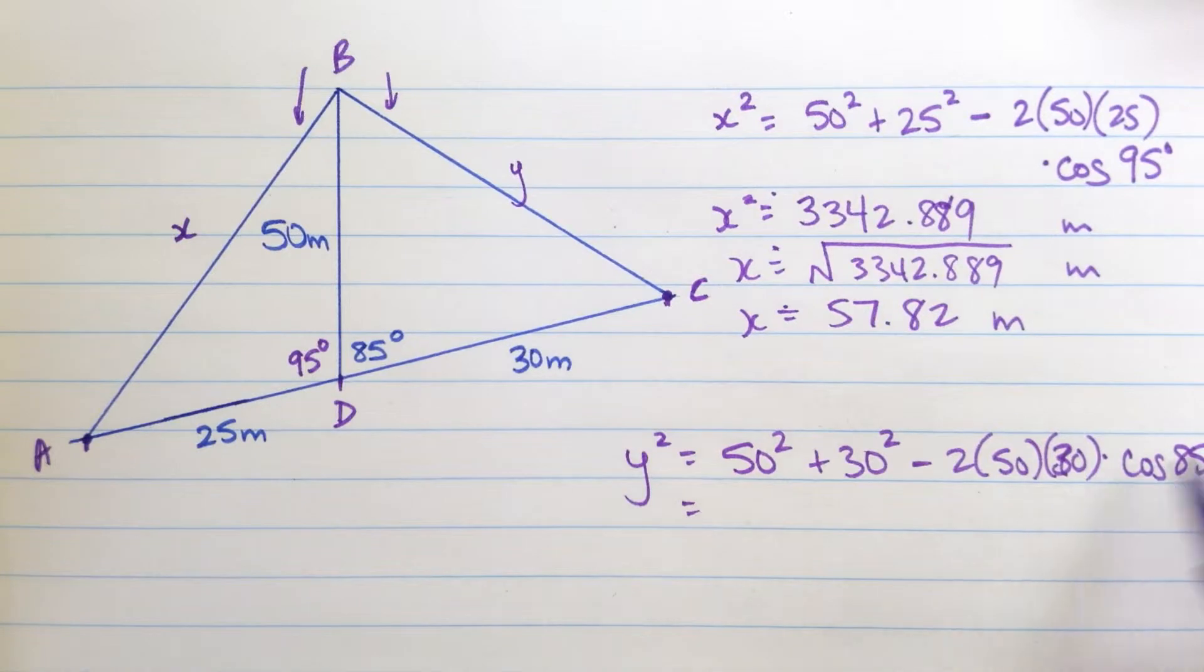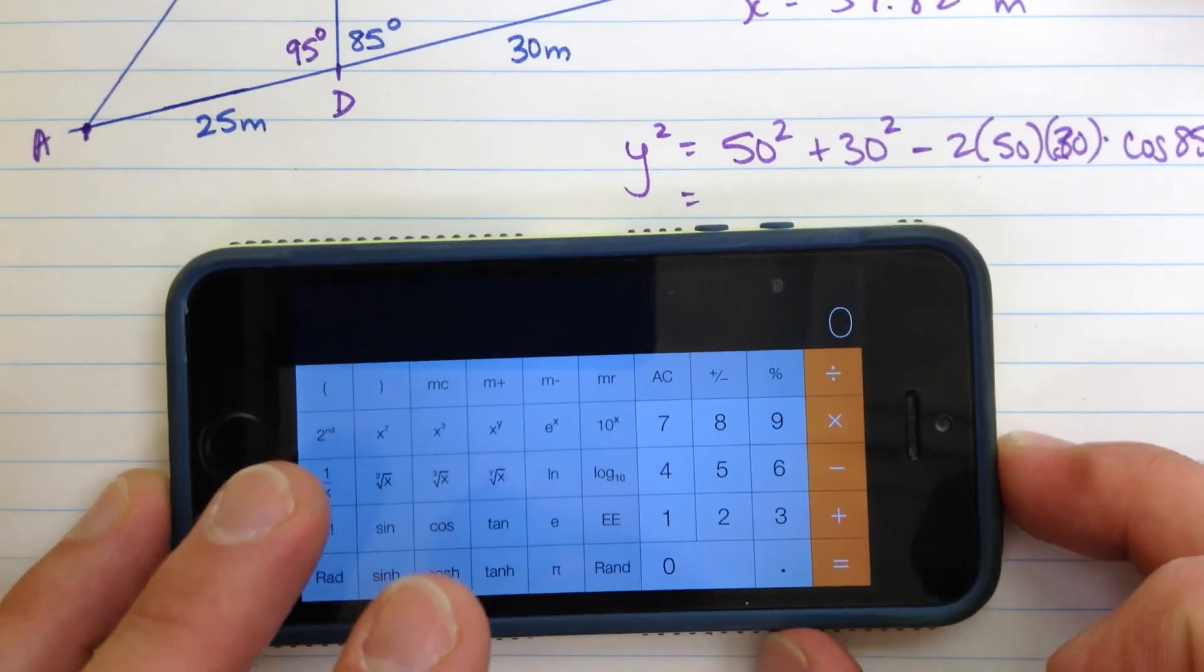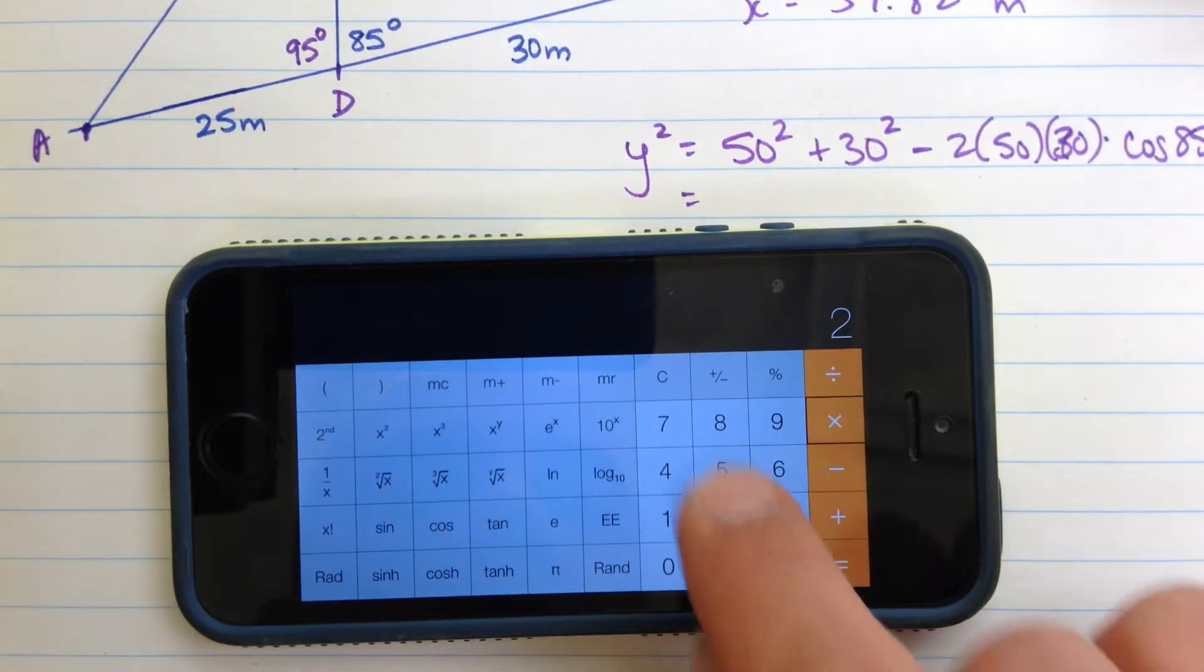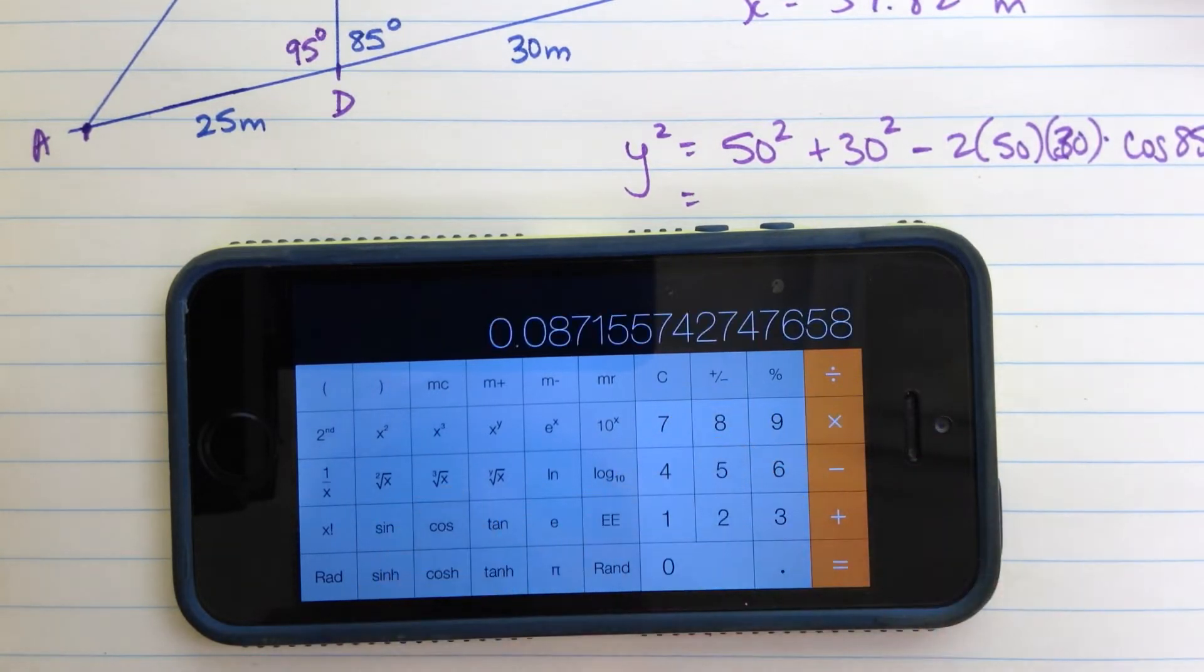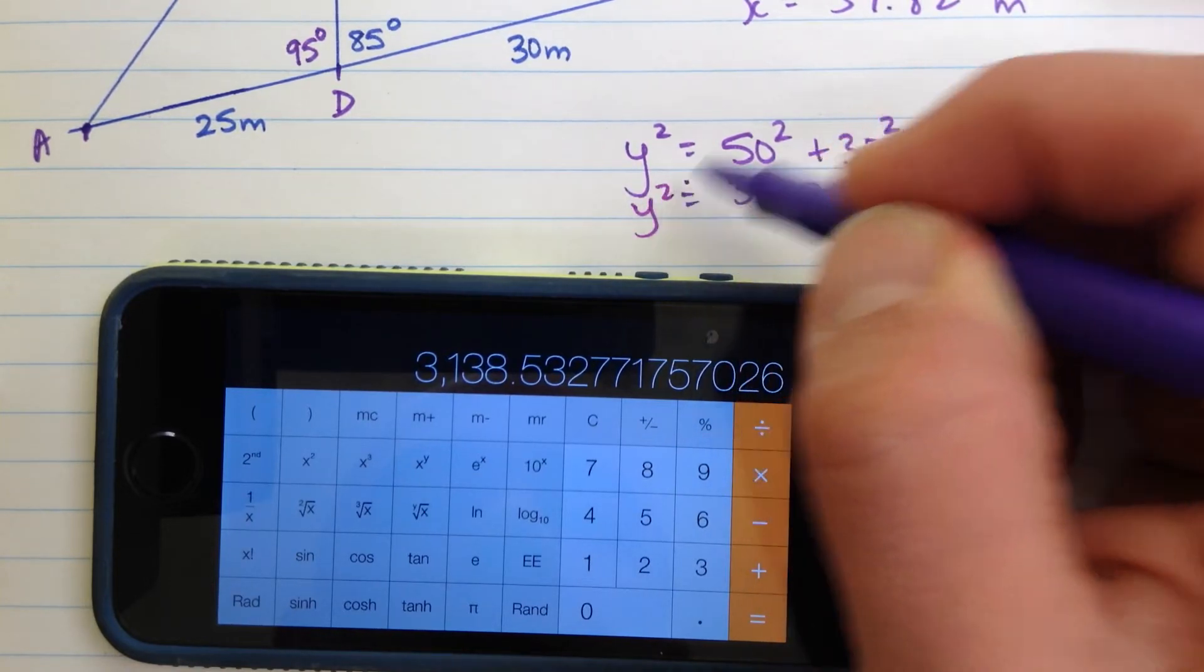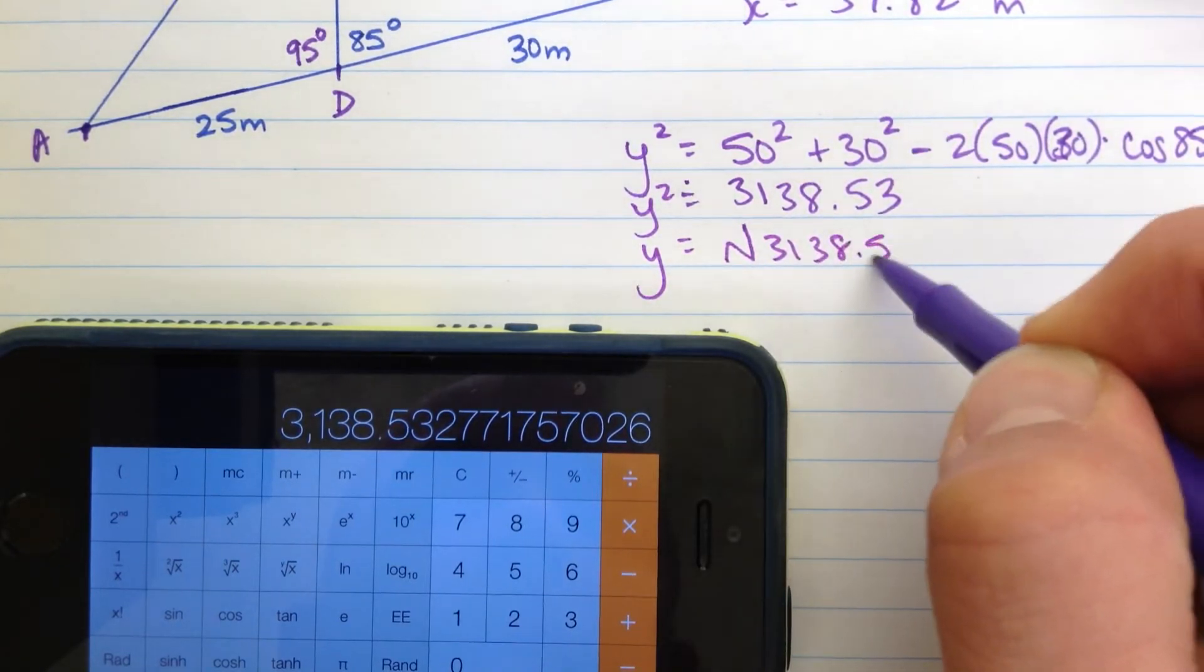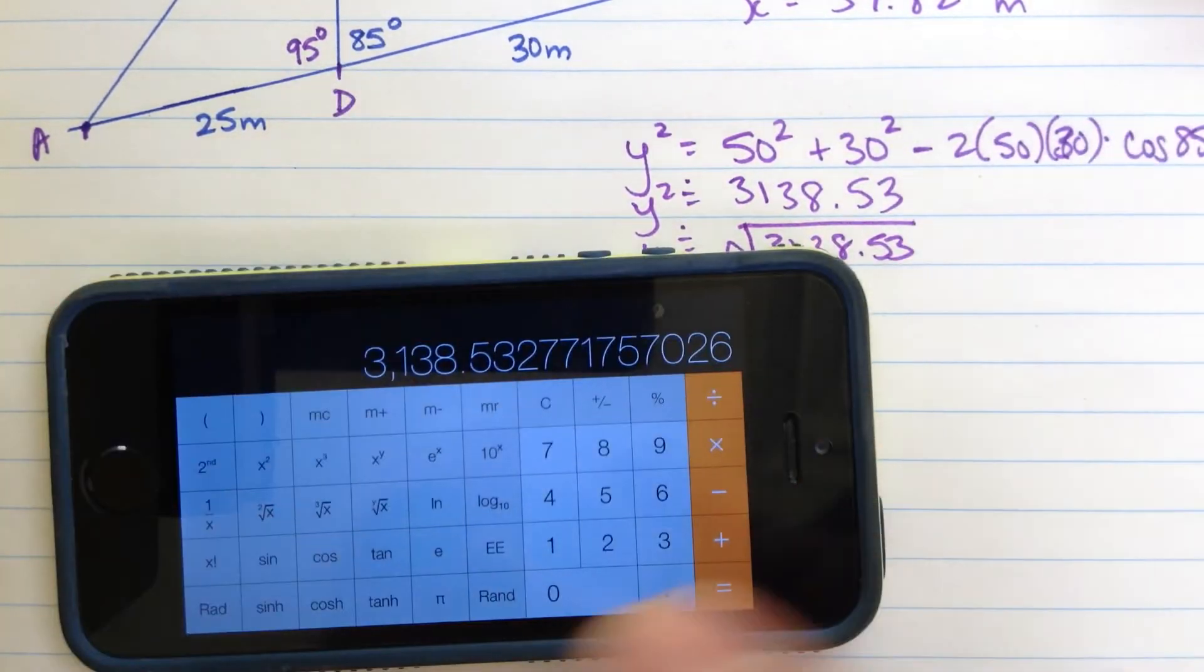And so, 2500 and 900 and all this stuff here we're going to work out. I'll again bring up my calculator and I'm going to do this once again in one fell swoop. 50 squared plus 30 squared minus 2 times 50 times 30 times 85 cos and then press equals. 3,138 point about 5.3. That's approximately and that's y squared. So that means y must be equal to the square root of that thing approximately.